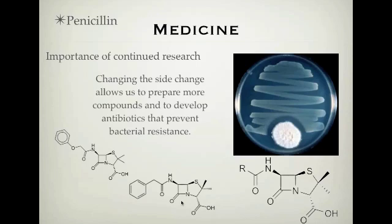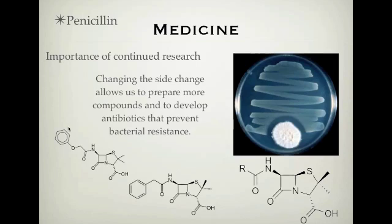Bacteria can realise that a compound is going to kill them and genetically modify themselves to build up a resistance to it. To prevent bacterial resistance, we change the side group of the normal molecule. The two types of penicillin shown have been changed to reduce bacterial resistance. Another reason to change the side chain is to address side effects. For example, opiates — codeine, morphine, and heroin — all have the same general structure but differ in functional groups, which changes side effects and addictiveness.